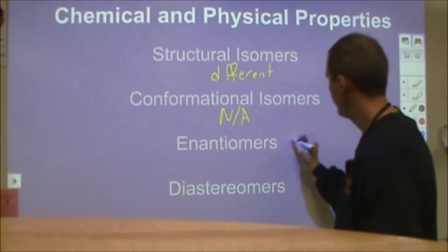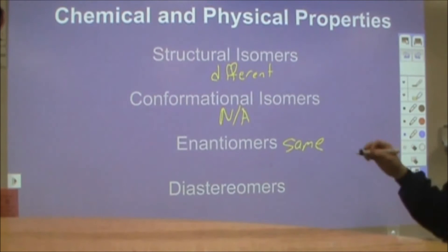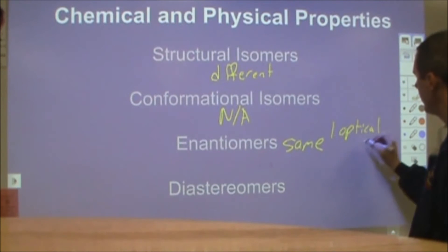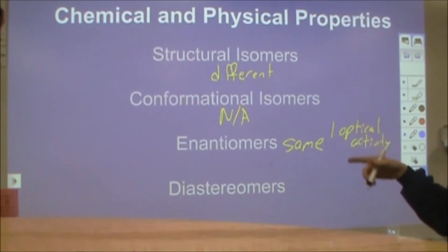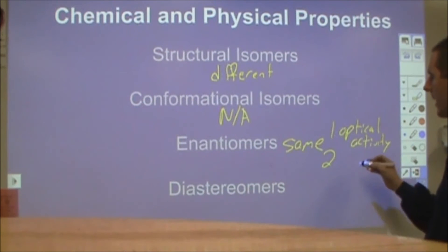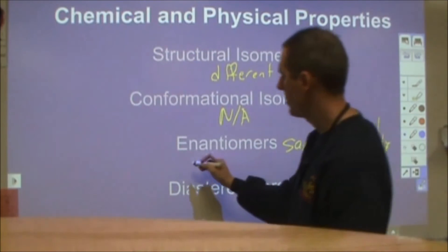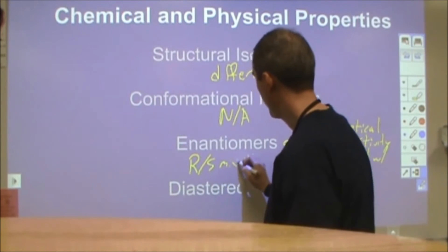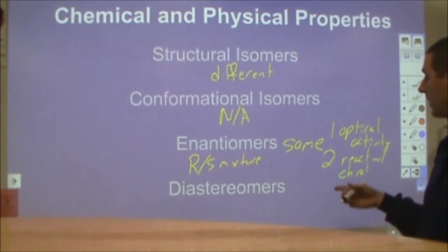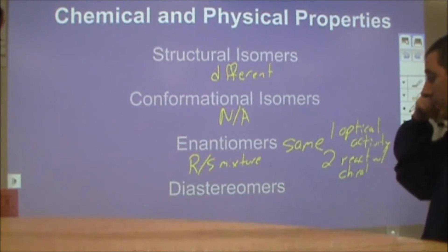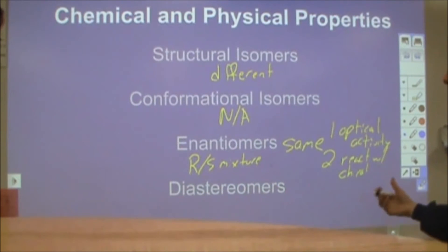But enantiomers and diastereomers, so enantiomers are the same chemically and physically with two exceptions. The way they interact with polarized light is a different physical property. So the fact that one will rotate the plane of polarized light in one direction and the other will rotate in the other direction distinguishes the two so we can tell them apart. And then their reactivities are identical as long as they are doing reactions with things that are not chiral, but they will react differently with other chiral things. And this is important because there are situations where you will have an R and S mixture and you might want to separate it. If they're equal amounts, this actually shows no optical activity, it would be what's called a racemic mixture.